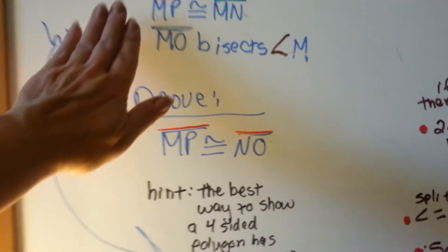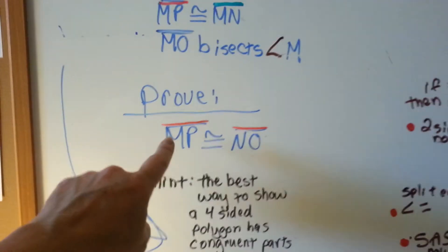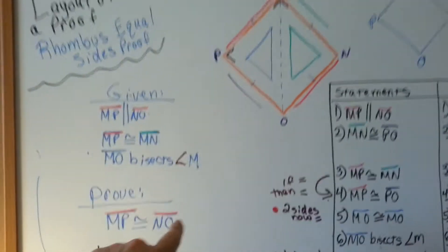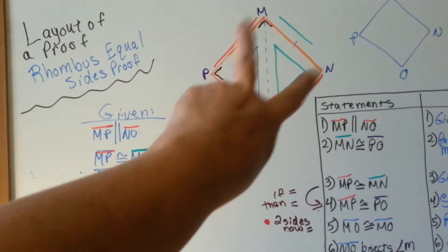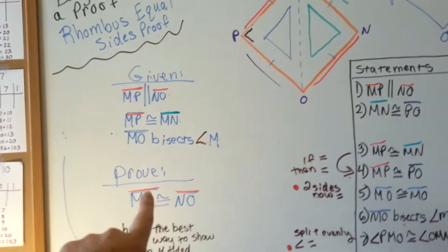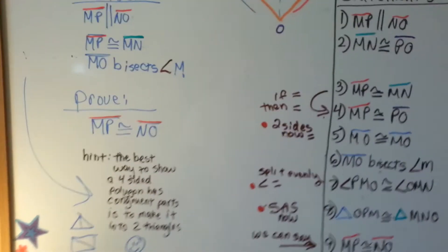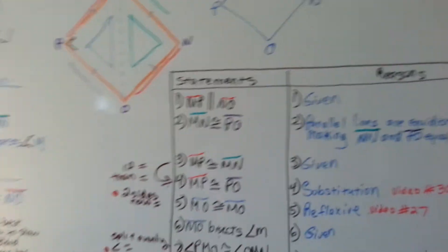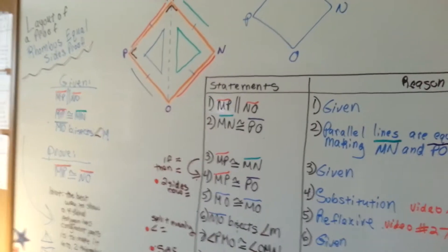So our prove is that MP, the red one, is congruent to NO. We need to prove that these two are congruent. Now the first thing we're going to do is, I'm going to get a better view here.